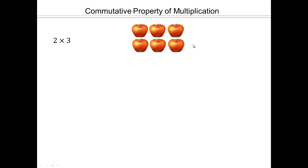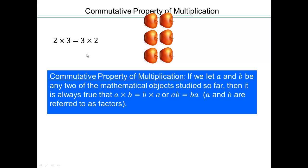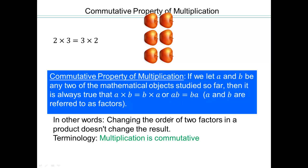Let's talk about the commutative property of multiplication. We know 2 times 3 is 2 rows of 3 objects. We can also write 3 times 2 as 3 rows of 2 objects, both giving us 6 as the product. This property, where 2 times 3 equals 3 times 2, is called the commutative property of multiplication. This property is true not just for whole numbers, but for all mathematical objects we've studied so far. So A times B equals B times A, or AB equals BA. In other words, changing the order in which you multiply does not change the final result.